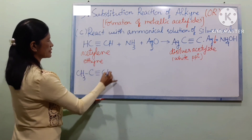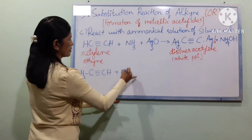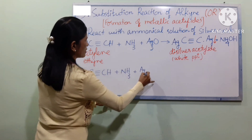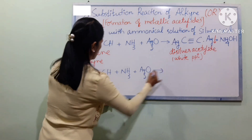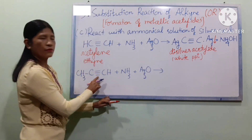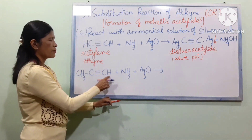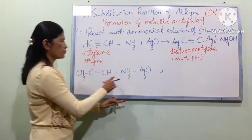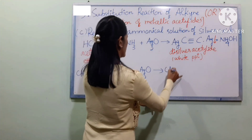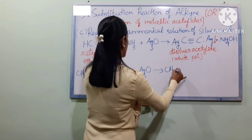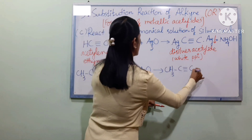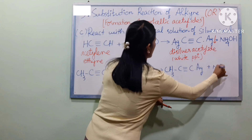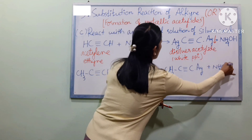CH3CH plus NH3 plus AgNO2 gives Ag-acetylide plus NH4OH.